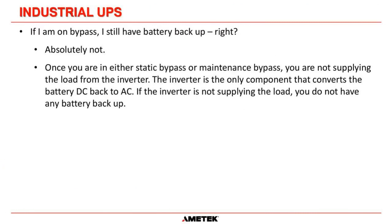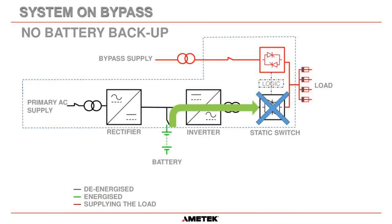One more misconception: 'If I'm on bypass, I still have battery backup, right?' Absolutely not. Once you are on static bypass or maintenance bypass, you are not supplying load from the inverter. Whenever you are not supplying power from the inverter, you are not connected to the battery — only the inverter converts DC back to AC. So if the inverter is not supplying the load, you do not have any battery backup. If bypass fails while you're on bypass, unfortunately you will lose power to the load because the battery cannot supply the inverter through the inverter static switch, since it is off.